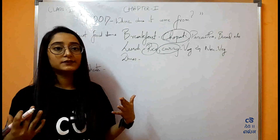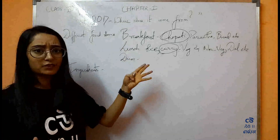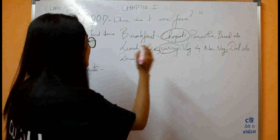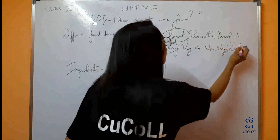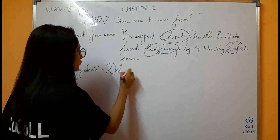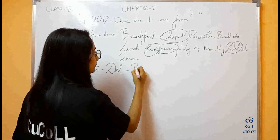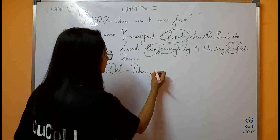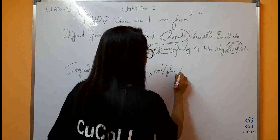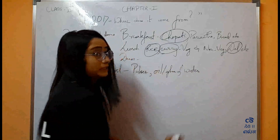Now let us start with the ingredients — what are they made of? Different foods are made of different ingredients. Let us take an example: ingredients like eggs, oil or some use ghee, water. These are the main ingredients.